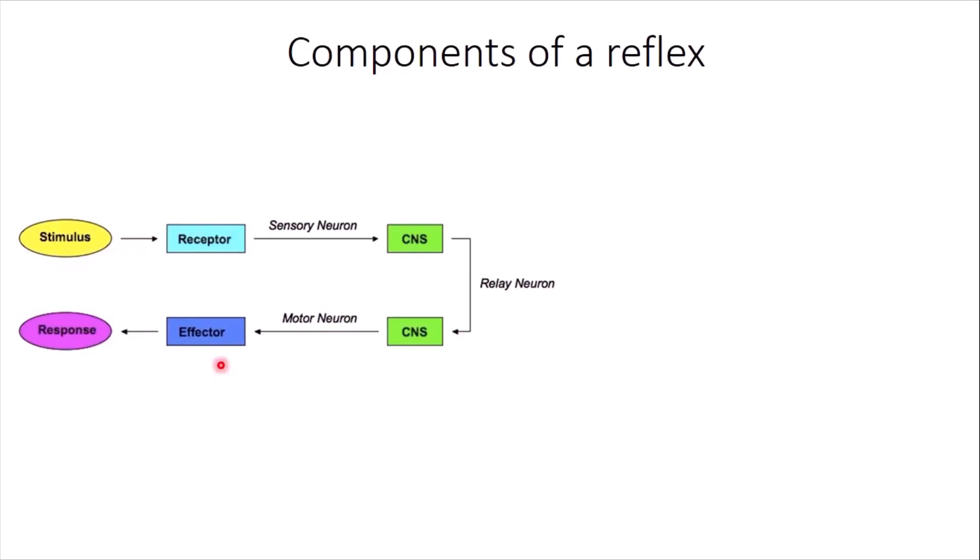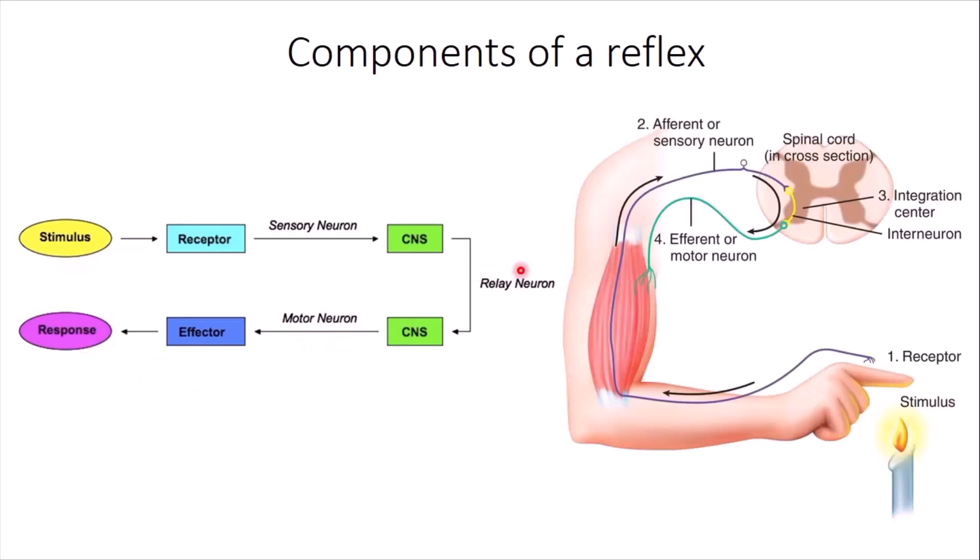Now finally, recall that every reflex has the following components. It starts with a stimulus which launches the response, which is detected by a sensory receptor that sends messages through sensory neurons to the CNS, the nerve center, which in turn sends orders out by the motor neurons to the effectors that give the response. In this case, for example, the stimulus is the heat in the candle. The sensory receptor is the thermoreceptor in the skin.